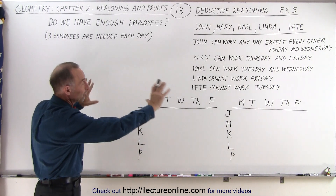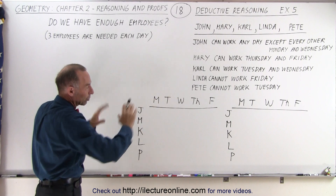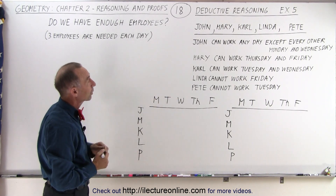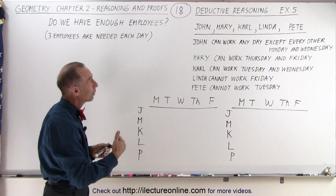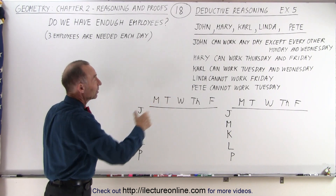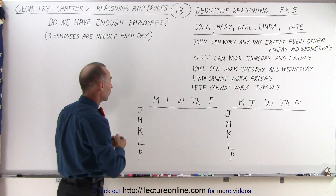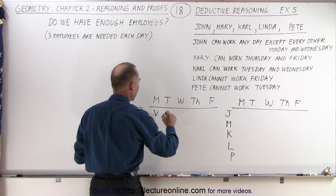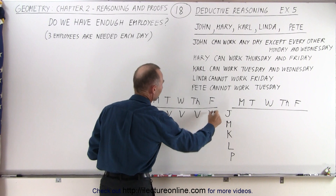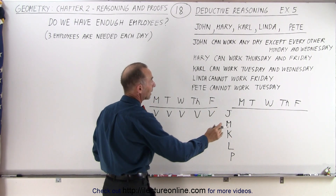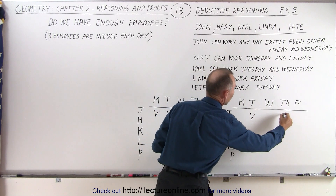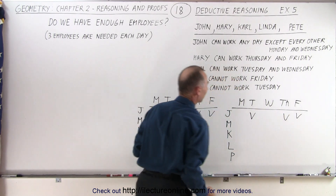Visualization — a picture is worth a thousand words. John can work any day of the week except every other Monday and Wednesday. We'll assume he cannot work Monday and Wednesday on the second week each time. So John can work Monday, Tuesday, Wednesday, Thursday, and Friday of week one. But week two he cannot work Monday and he cannot work Wednesday — so only Tuesday, Thursday, and Friday.